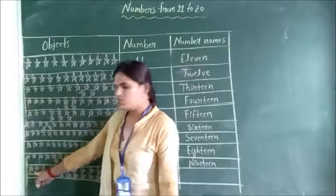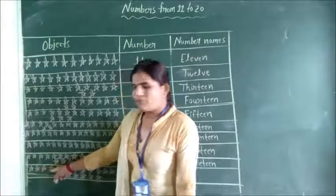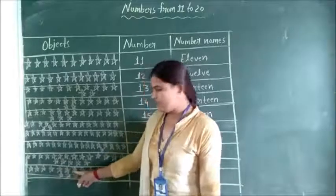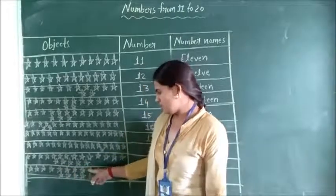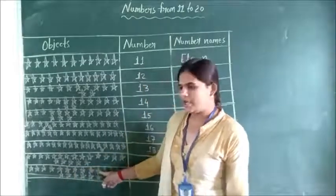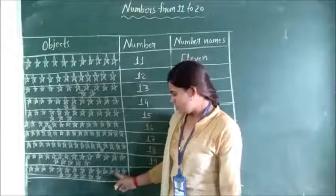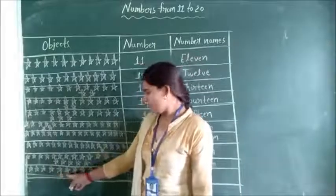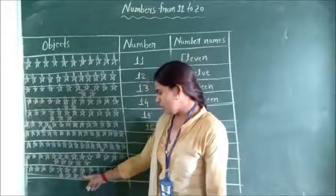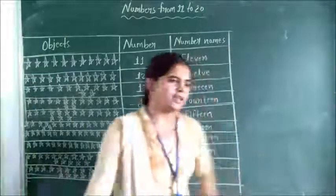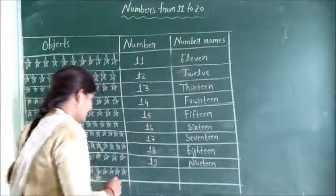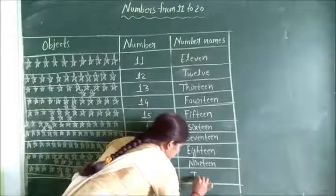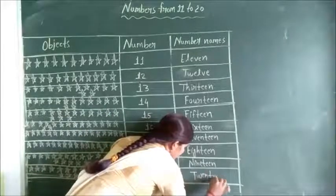Count: 1, 2, 3, 4, 5, 6, 7, 8, 9, 10, 11, 12, 13, 14, 15, 16, 17, 18, 19, 20. Very good! Let's write it. 20 — T, W, E, N, T, Y. Twenty.